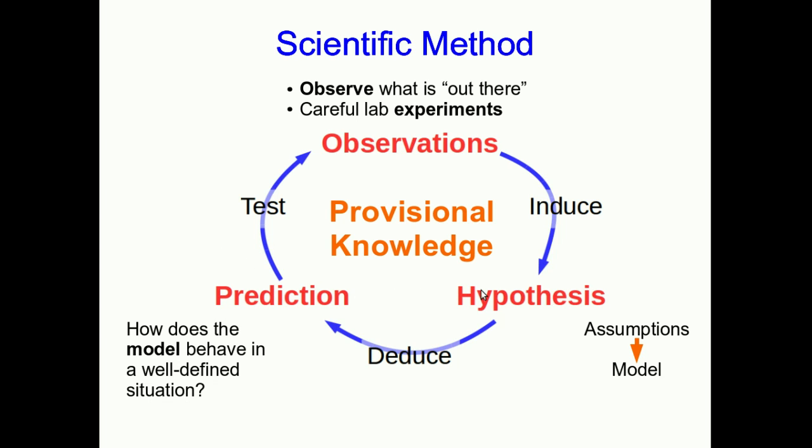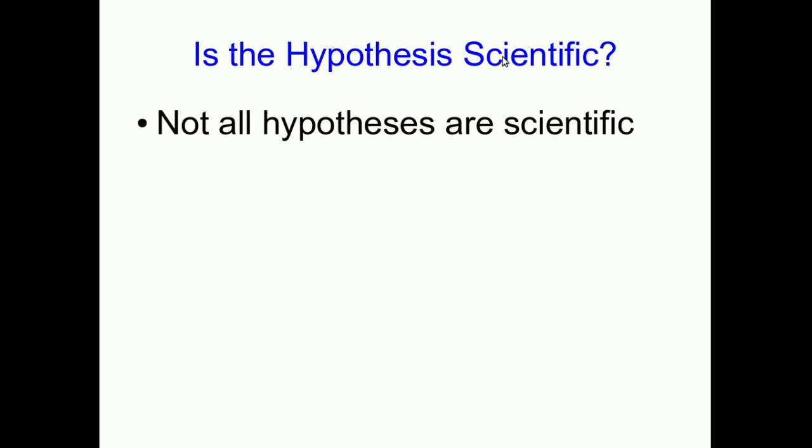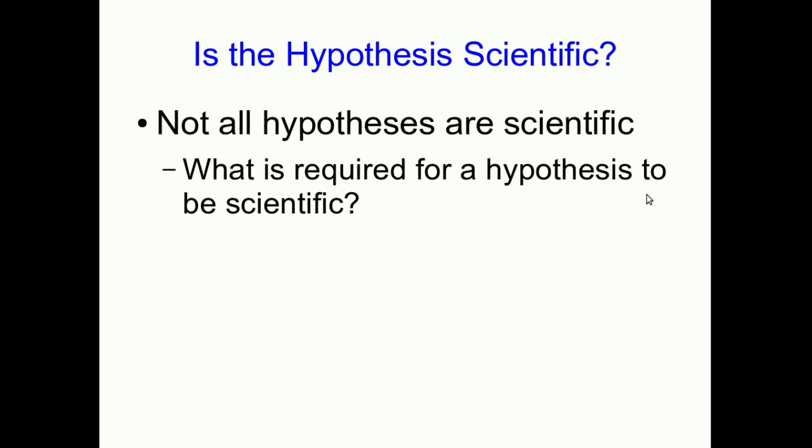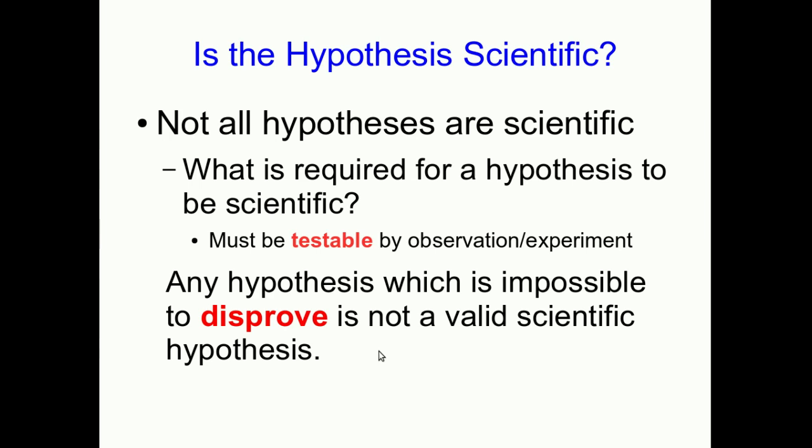And so all of this is what we would call provisional knowledge. All scientific knowledge is provisional. We're constantly revising it in light of new observations. Not all hypotheses are equally scientific. So you might ask what's required for a hypothesis to be scientific? The main requirement is that it has to be testable by observation or experiment. And in particular, it's certainly not a scientific hypothesis if it's impossible to disprove. In one word, we say that a hypothesis must be falsifiable, which just means possible to disprove.